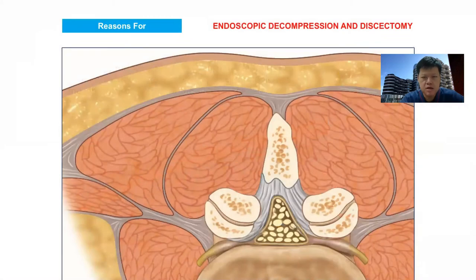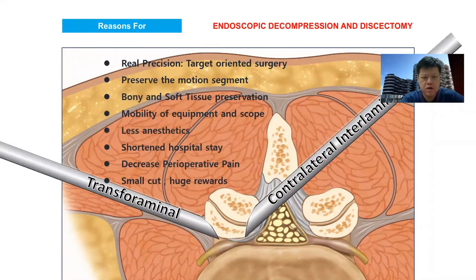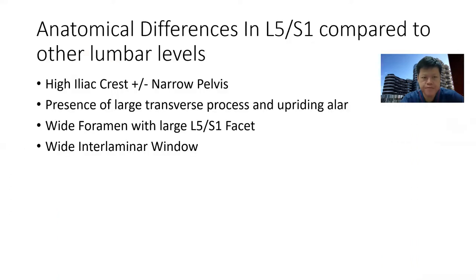Generally, the reasons why we do endoscopic surgery — be it transforaminal or contralateral interlaminar approach — is to have target-oriented surgery, preserving the motion segment, and achieving soft and bony tissue preservation, with great mobility of equipment and scope, allowing shorter hospital stay, less postoperative pain, less anesthesia, and small cuts with huge rewards.